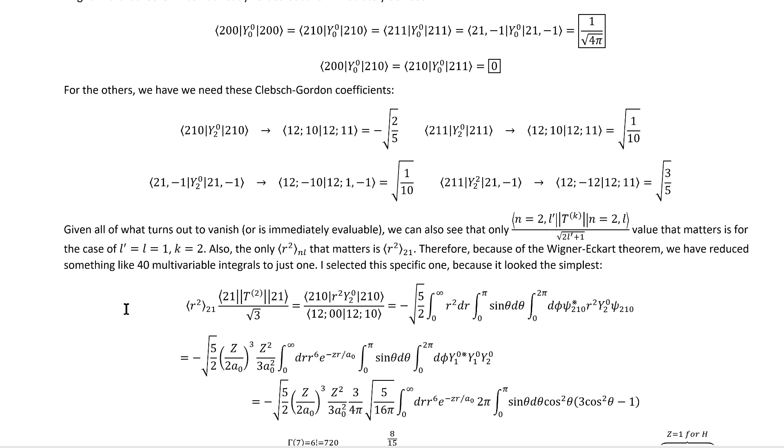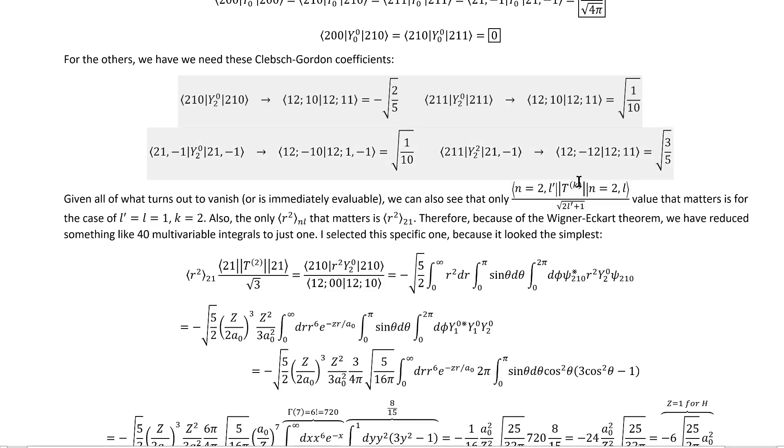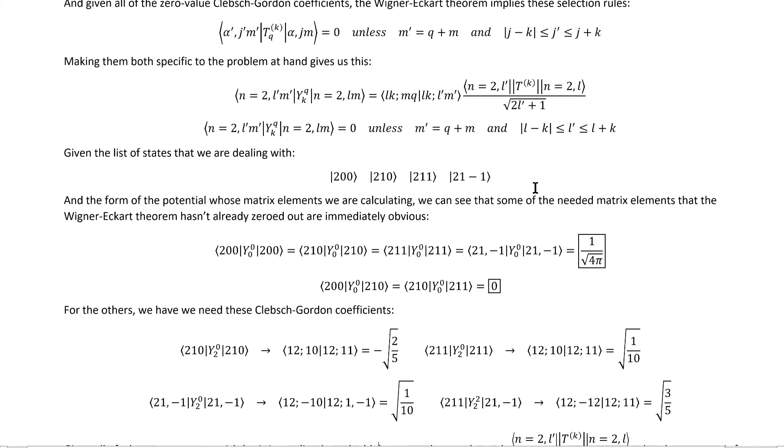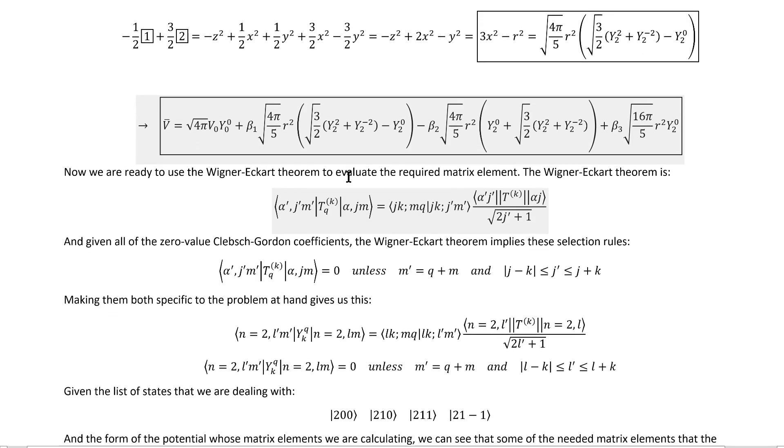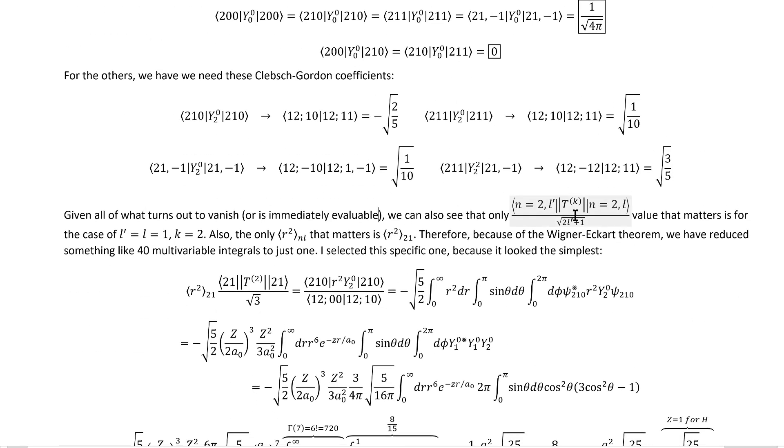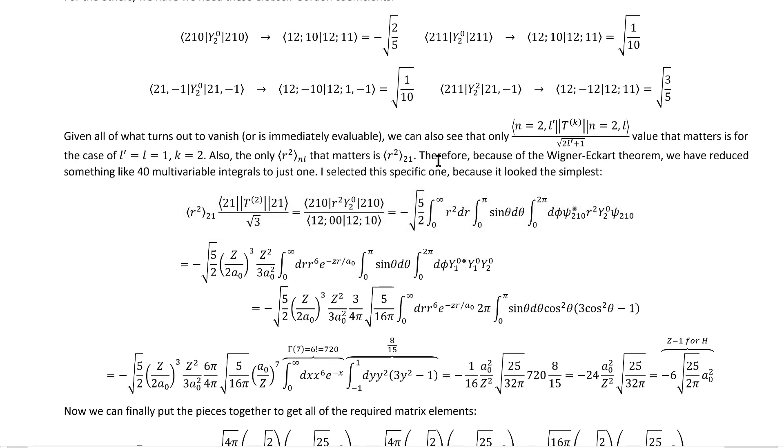Therefore, primarily because of the Wigner-Eckart theorem, we have reduced what would have been something like 40 multivariable integrals to just one. Now, unfortunately, we will have to evaluate a multivariable integral to calculate the one of these that we need and the one of those that we need. However, we don't actually need to do two separate integrals. If we look up at the form of this potential and think about taking hydrogen atom matrix elements of this, we see that we're only ever going to need the product of these two quantities. We don't actually need to know them independently, and we can calculate that product with just a single integral. Therefore, primarily because of the Wigner-Eckart theorem, we have reduced what would have been something like 40 multivariable integrals to doing just one. You can see why this theorem is said to be so important. It really does save a lot of time.